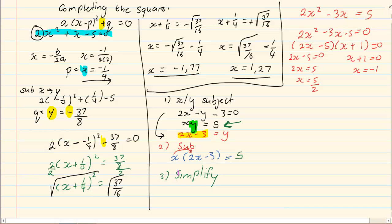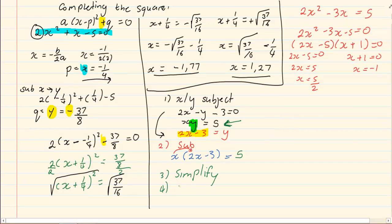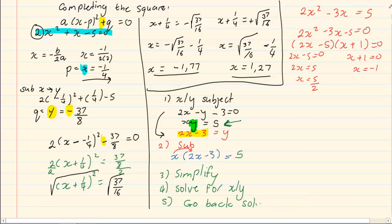But, once we are done simplifying and we have solved for x, you have to go back and solve for the other unknown. So, in this case, we are going to go back to 2x minus 3 equals y. We are going to substitute the 5 over 2 and the minus 1 into x to get y. So, we have 2 into 5 over 2 minus 3 equals y, y equals 2. And, we have to do the second one where 2 into minus 1 minus 3 equals y. So, we have y equals minus 5.